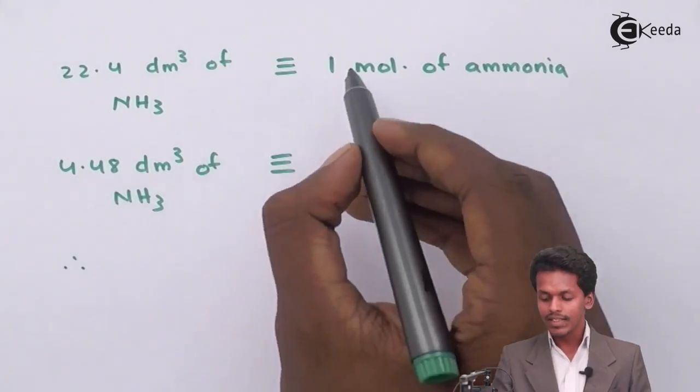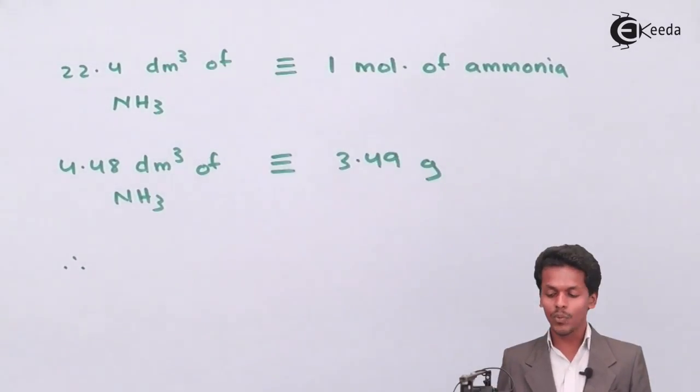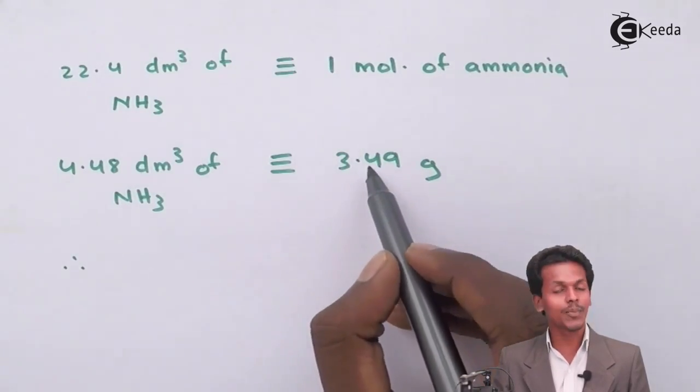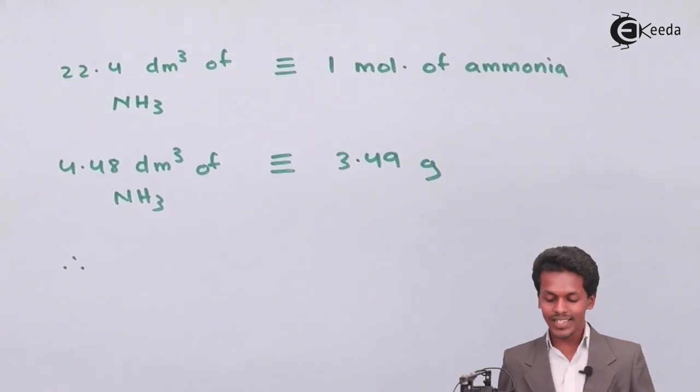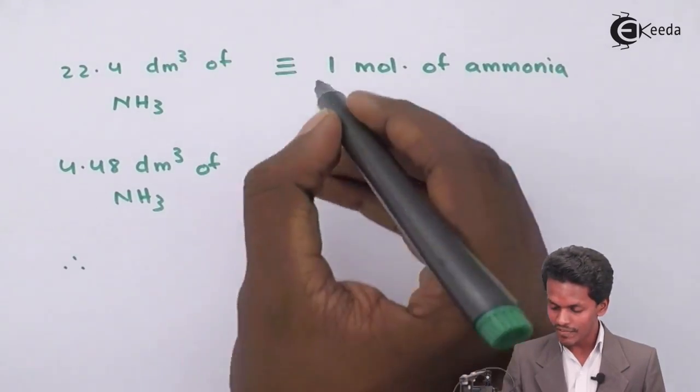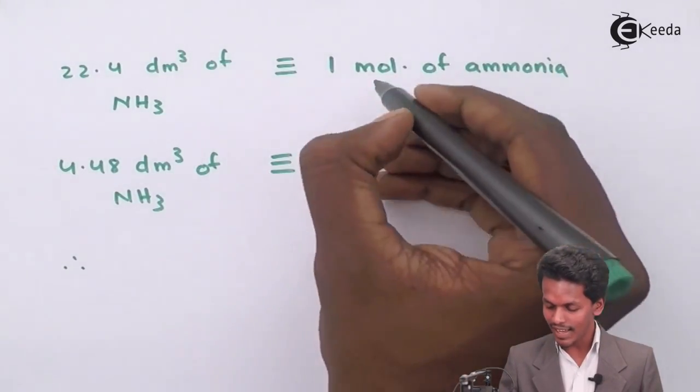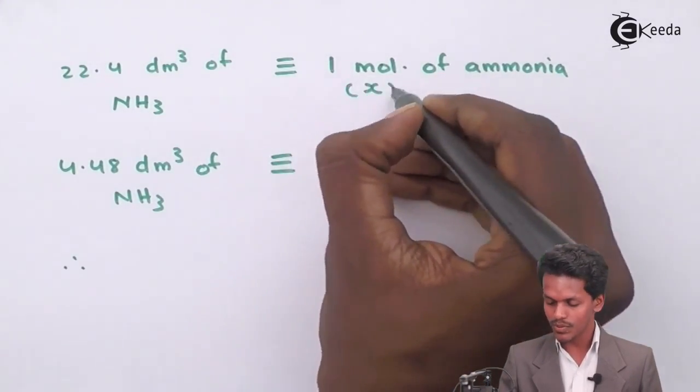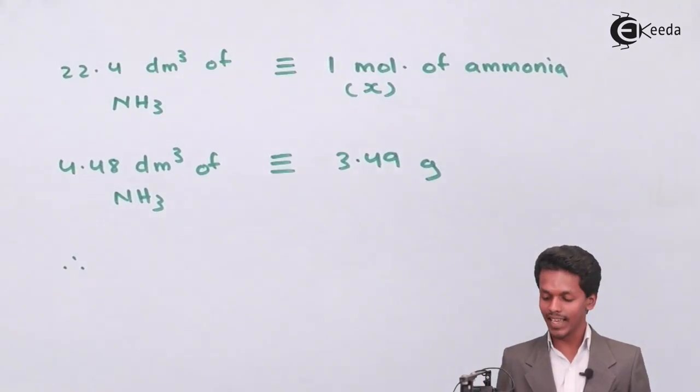If I consider one mole of ammonia as w/m, and in this case w is being mentioned as 3.49 grams, I could easily calculate it. If I suppose I would take this as m equals x.